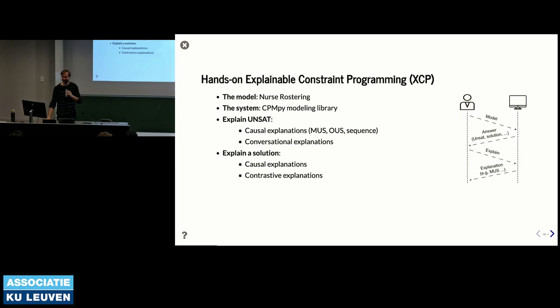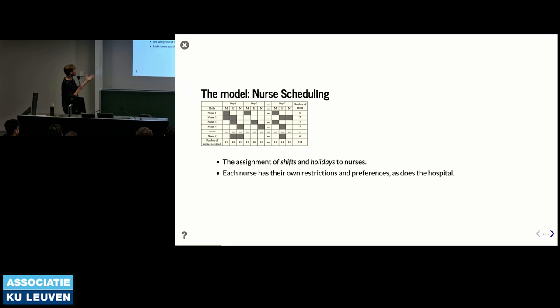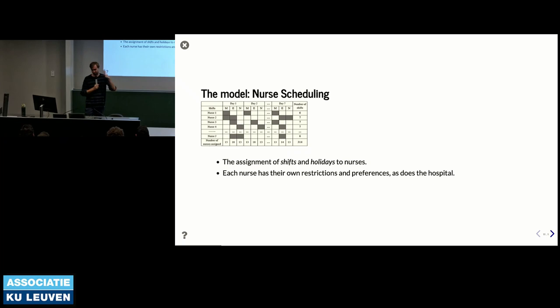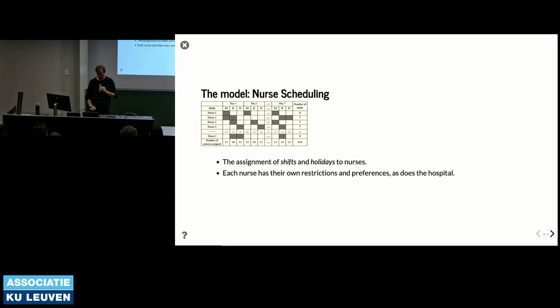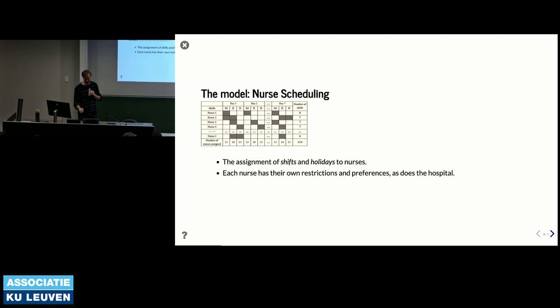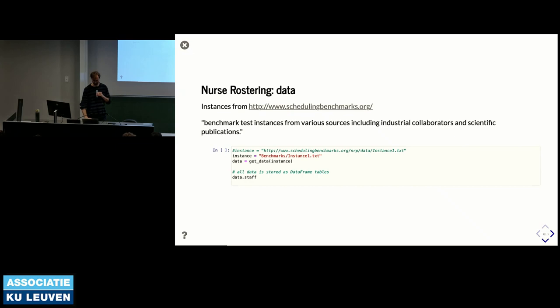The running example is a nurse scheduling problem. The goal is to assign shifts and holidays to nurses: for each time slot we decide whether a nurse takes that shift or not. Each nurse has specific restrictions and preferences, as does the hospital regarding required nurse counts at certain moments of the day. The data is open benchmark data from schedulingbenchmarks.org, which has test instances from industrial collaborators and scientific publications.